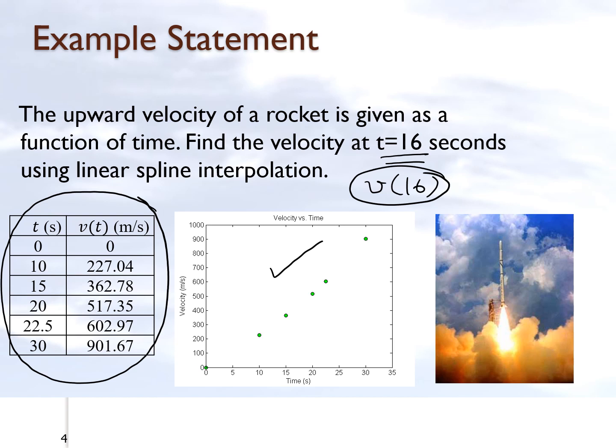Because we're only interested in finding the velocity at 16, we can simply use the part of the linear spline interpolant which goes from 15 to 20, because the closest points to 16 are 15 and 20, which also bracket that particular point. So you might say hey, this sounds very similar to linear polynomial interpolation, and it is.